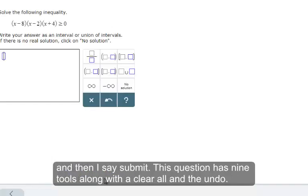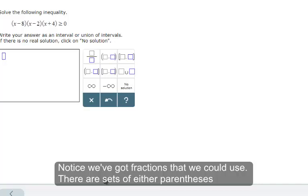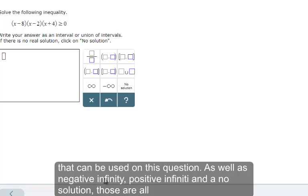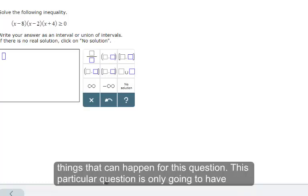This question has nine tools along with the clear all and the undo. Notice we've got fractions that we could use. There are sets of either parentheses, brackets, or a combination of bracket and parentheses that could be used on this question. And there's a negative infinity, a positive infinity, and a no solution. And those are all things that can happen for this question. This particular question is only going to have brackets.